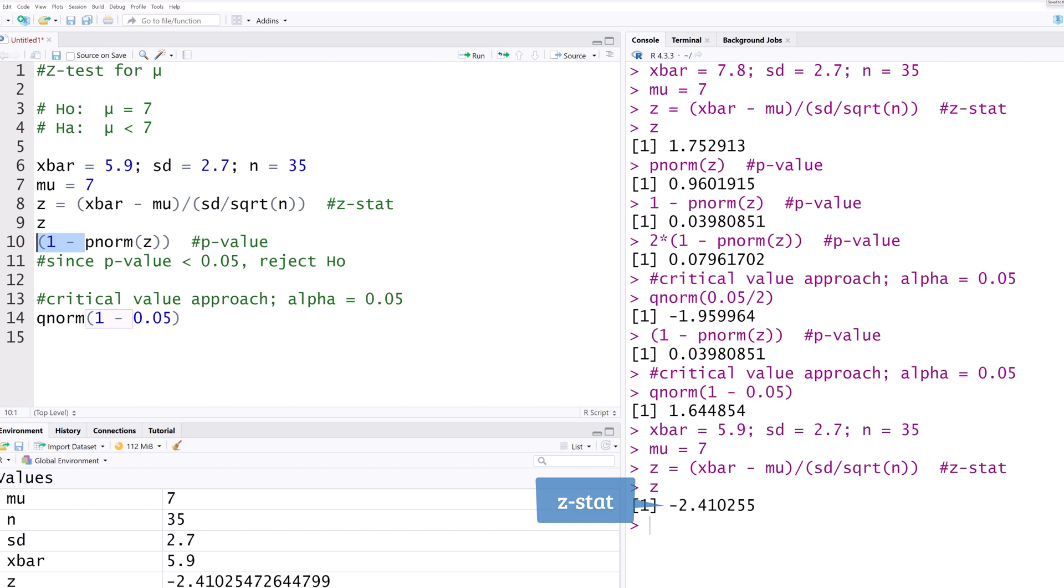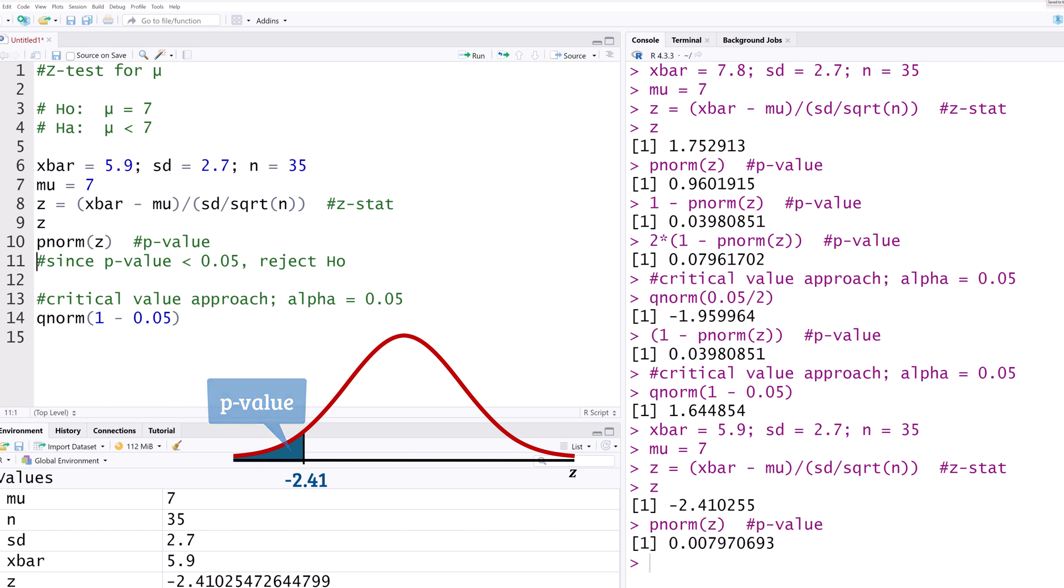Since this is a lower tailed test, the P value can be found by simply taking PNORM Z. Running that results in a lower tailed area of 0.008, which is the P value for the test. Since this P value is less than 0.05, we will reject the null hypothesis and say that the result is significant in this case as well.